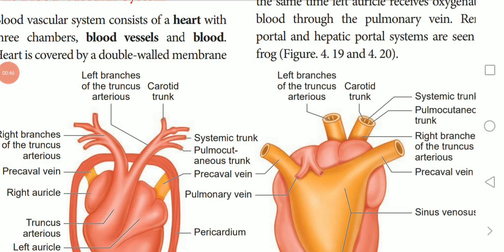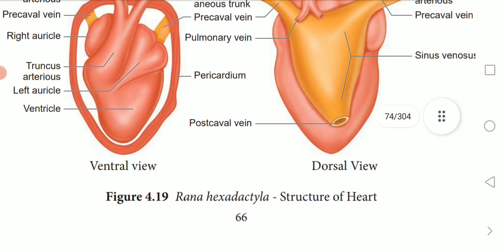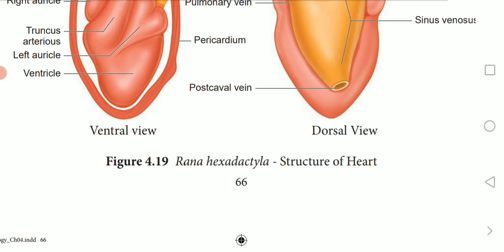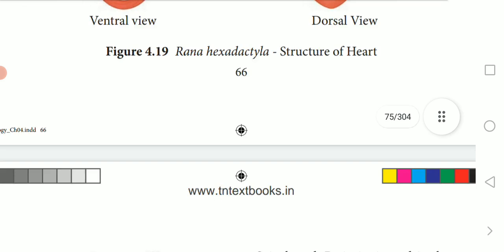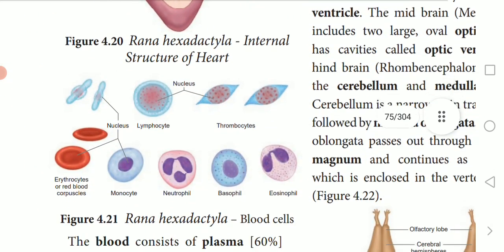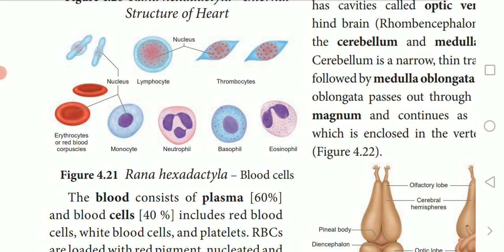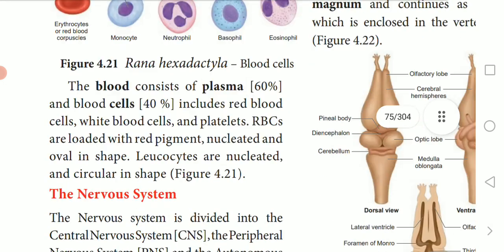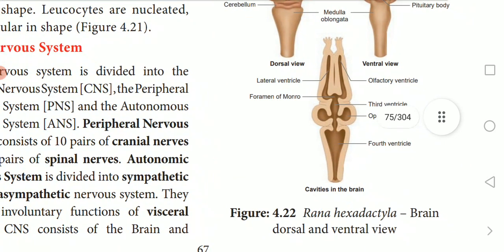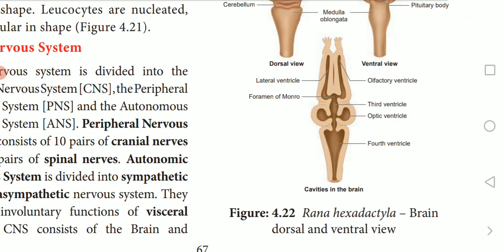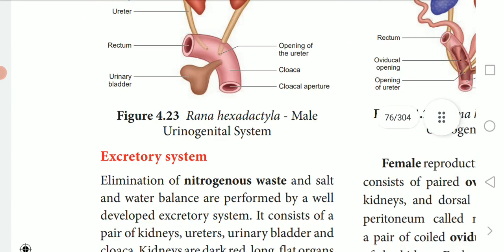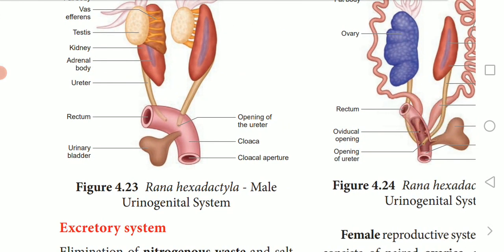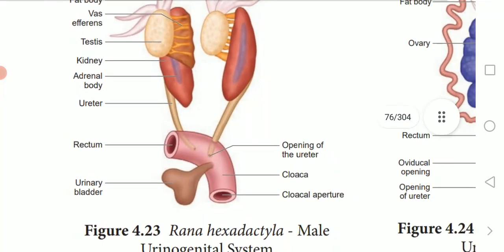In the last video class we have seen the structure of the heart of Rana hexadactyla, that is frog, and also we have seen blood cells of frog and the nervous system of frog. The next topic we are going to see is the excretory system of frog.